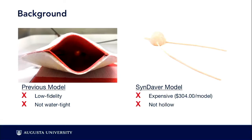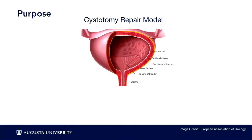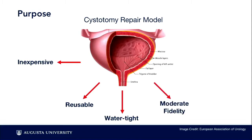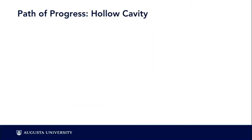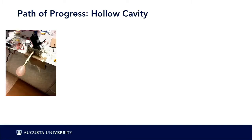For a residency program with about 10 students, that can be quite expensive, especially with lower budgets. Additionally it's not a hollow organ. So our project was to create the best of both worlds: an inexpensive, reusable, watertight, moderate fidelity bladder model with visible ureteral jets. If you've done any mold making or sculpture, you can imagine how challenging it is to create a hollow structure with a tiny little opening — you can't pull a core out through a urethra.